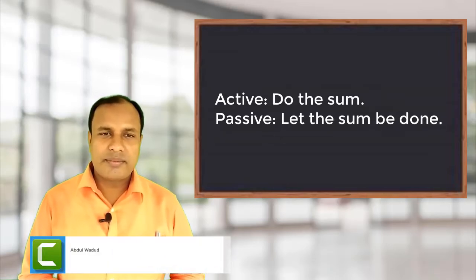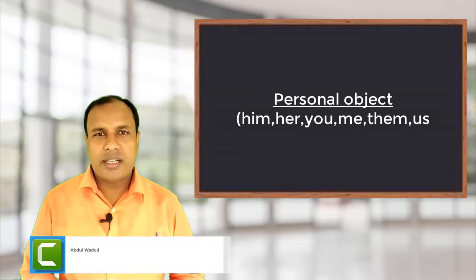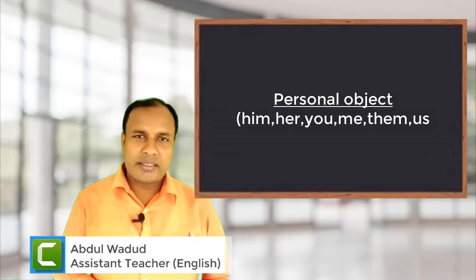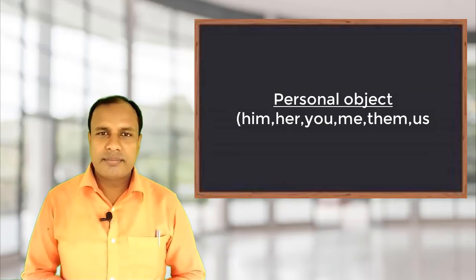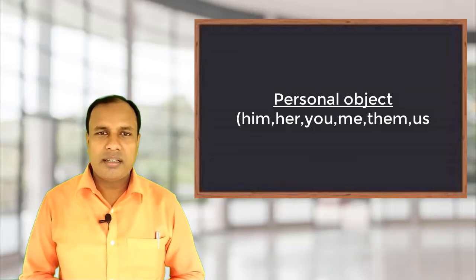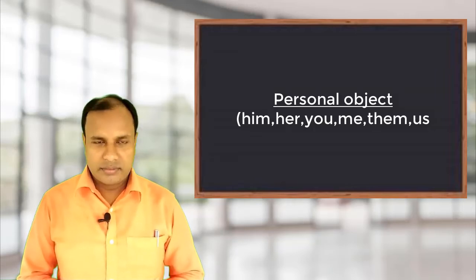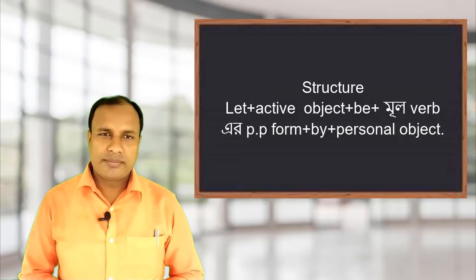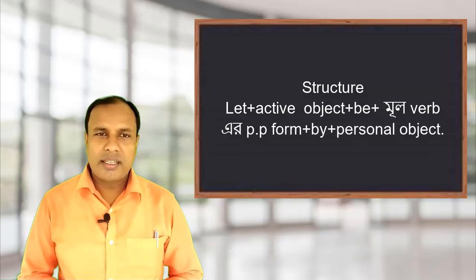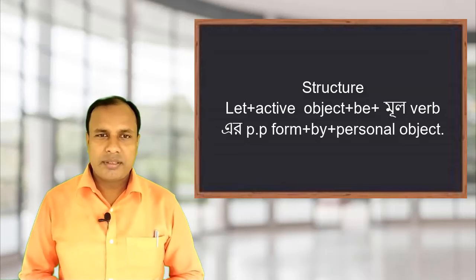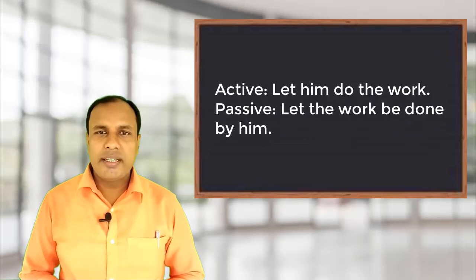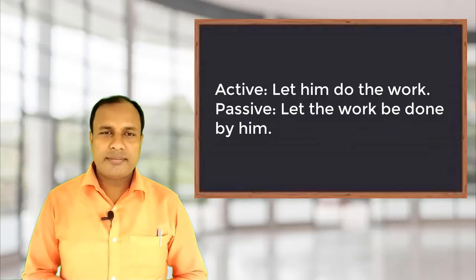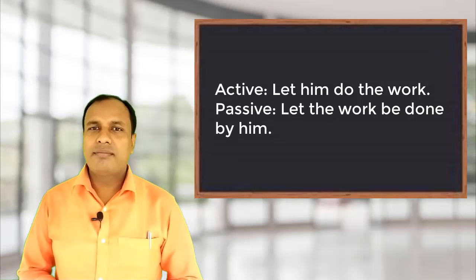Another structure uses 'Let' plus a personal object. The personal objects are: him, her, you, me, them, us, it. The structure to change active to passive with a personal object is: Let plus active object plus 'be' plus main verb past participle form plus 'by' plus personal object. For example: 'Let him do the work.' Passive becomes: 'Let the work be done by him.' Another: 'Let me complete the work.' Passive becomes: 'Let the work be completed by me.'